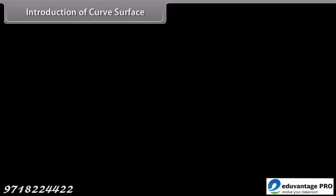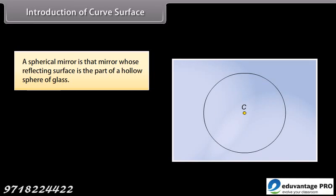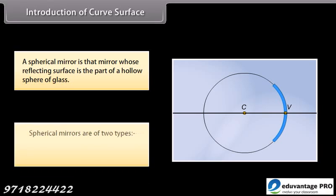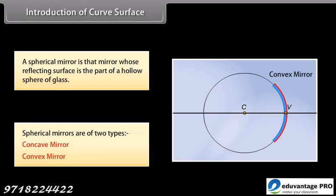A spherical mirror is a mirror whose reflecting surface is the part of a hollow sphere of glass. Spherical mirrors are of two types: concave mirror and convex mirror.